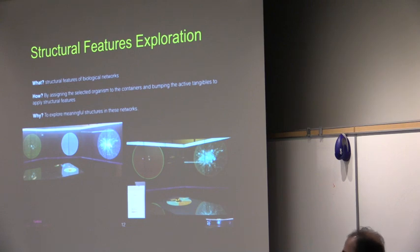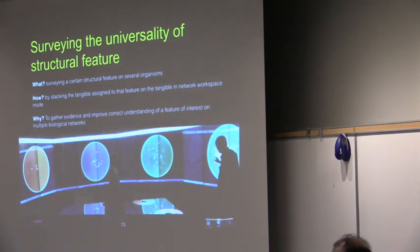And the results will be visualized on the eye-wall and the mobile devices through changes in the nodes and edges of the network, like the eigenvalue figure and feature shown on the right side. Users can also explore a certain structural feature on several organisms by stacking the feature actable assigned on a network's workspace actable. This helps to gather evidence and improve understanding of features on multiple biological networks as the stacking interaction applies the filter to all selected organisms.